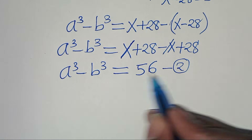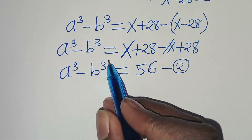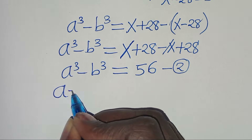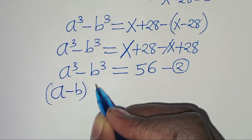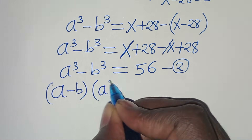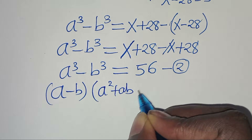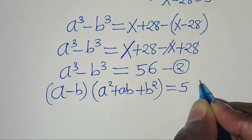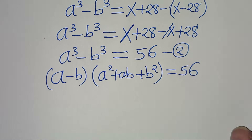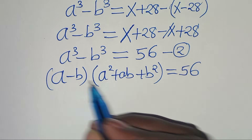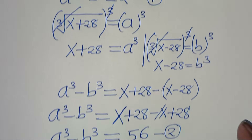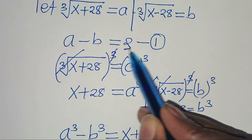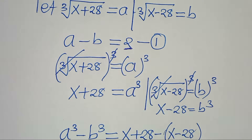From equation 2, a cubed minus b cubed is a difference of two cubes, which we can express as (a minus b) times (a squared plus ab plus b squared), and this equals 56. Now a minus b is what we have in equation 1.